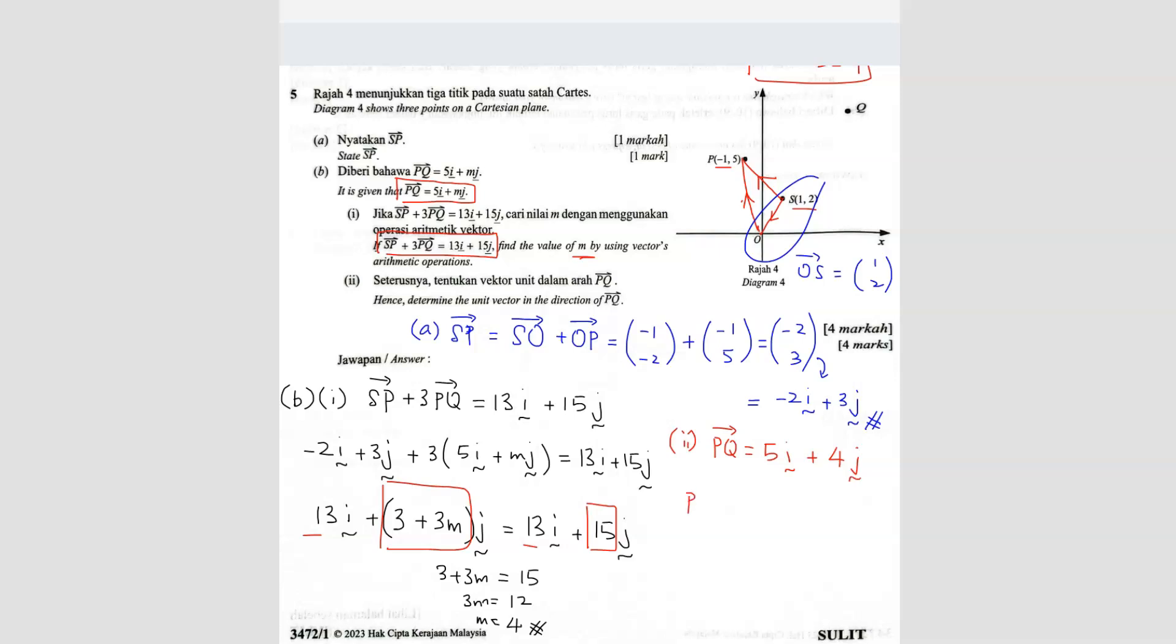So since we want to find for unit vector of PQ, the answer is going to be the vector, the vector PQ divided by the magnitude of PQ. So the vector of PQ we know is 5I plus 4J.